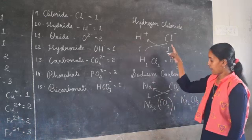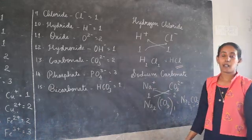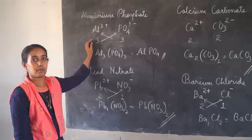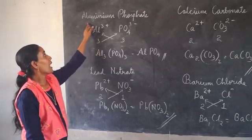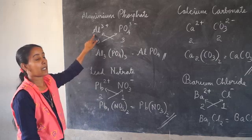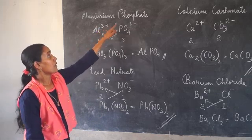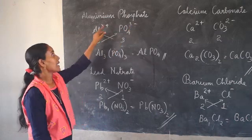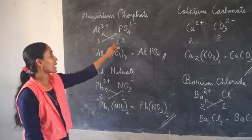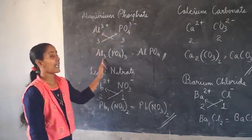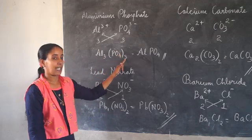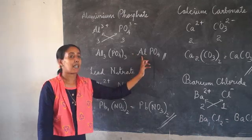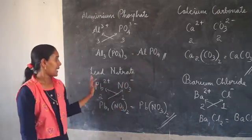This is the way to write the chemical formula using valencies. Next example: aluminium phosphate. Aluminium is Al3 plus. Phosphate is a polyatomic ion, PO4 3 minus. The valency of both ions is 3. Interchanging the valencies gives Al3 PO4 3. Since both valencies are the same, there is no need to write the subscript. The formula is AlPO4.